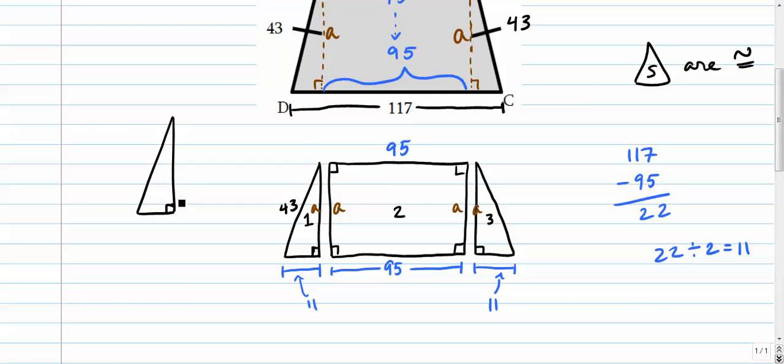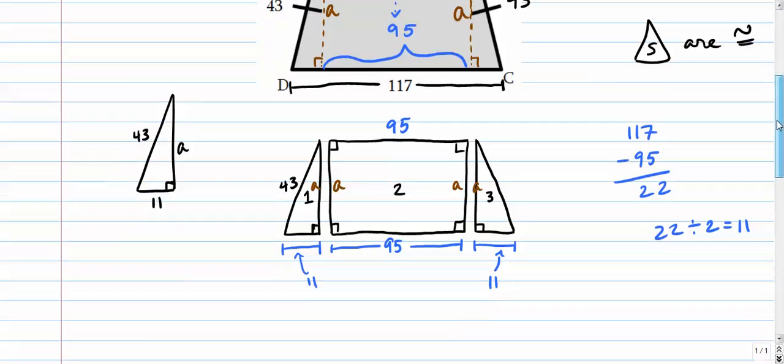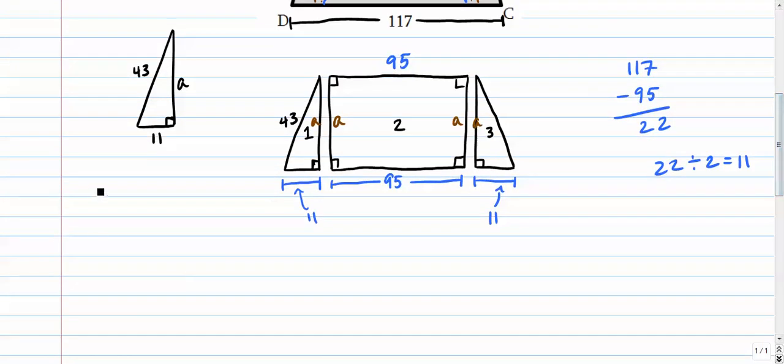I've got a right angle. I've got missing altitude. I've got 11 and I've got 43. That's a right triangle. We know two sides. We're missing the third one.